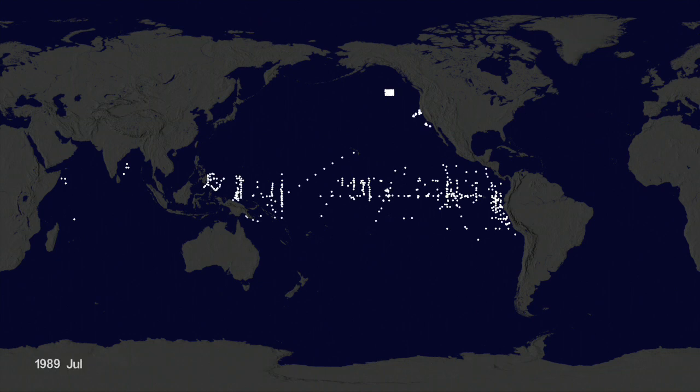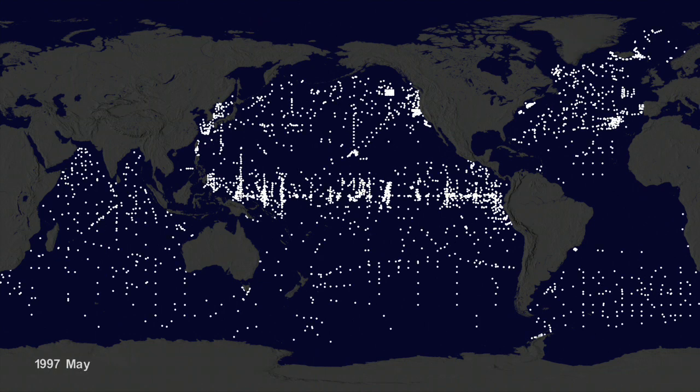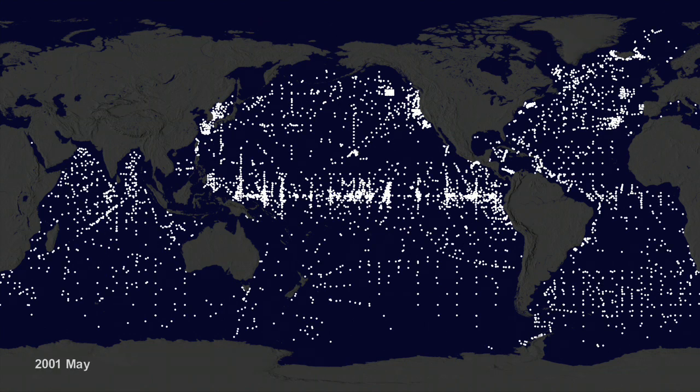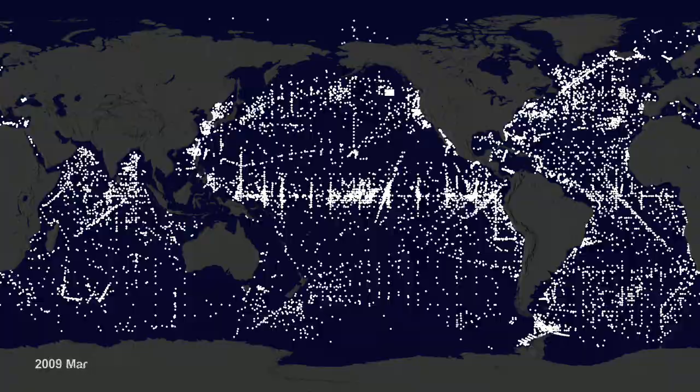Interesting patterns appear all over the place. Lines of buoys are due to ships and planes that released buoys periodically.